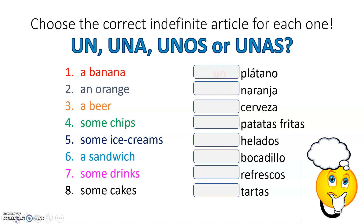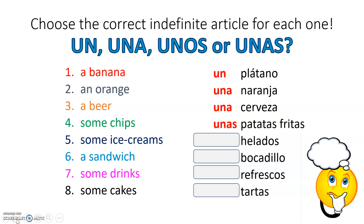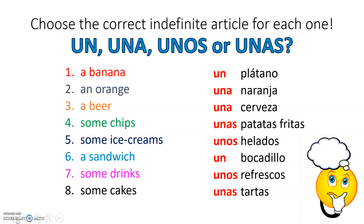So — a banana: un plátano. An orange: una naranja. A beer: una cerveza. Some chips: unas patatas fritas. Some ice creams: unos helados. A sandwich: un bocadillo. Some drinks: unos refrescos. And some cakes: unas tartas. Bien hecho if you got your full ocho puntos there!